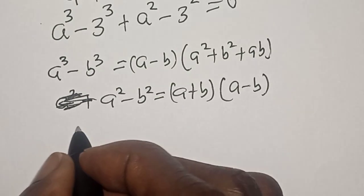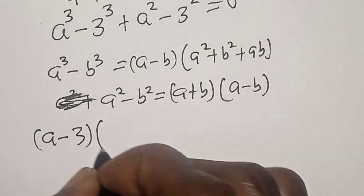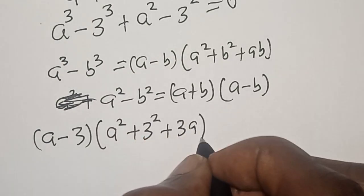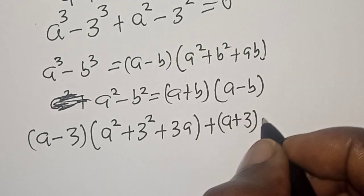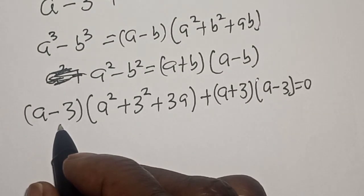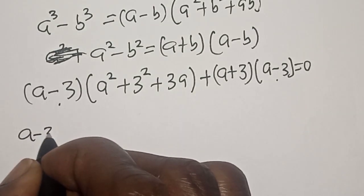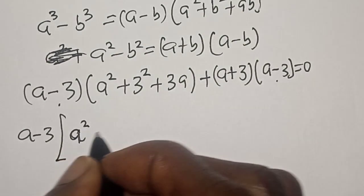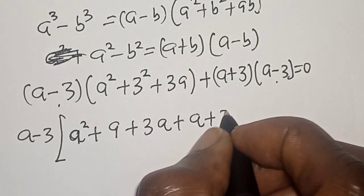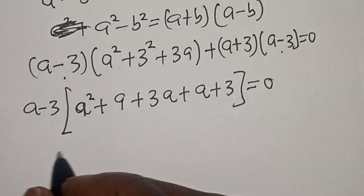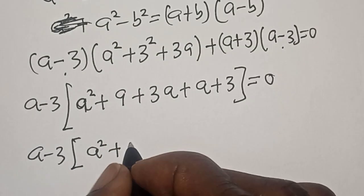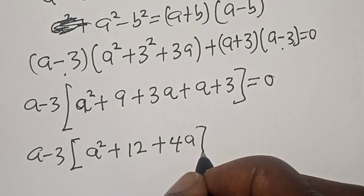Now we have a minus 3 equal to 0, and a minus 3 is common. Let's factor it out: a minus 3 times the quantity a squared plus 9 plus 3a plus a plus 3 is equal to 0. Combining like terms, a minus 3 times the quantity a squared plus 4a plus 12 is equal to 0.